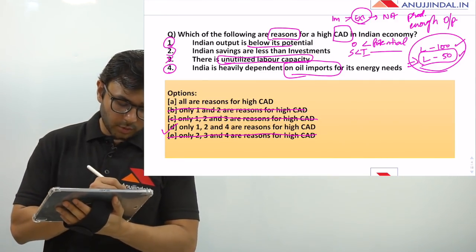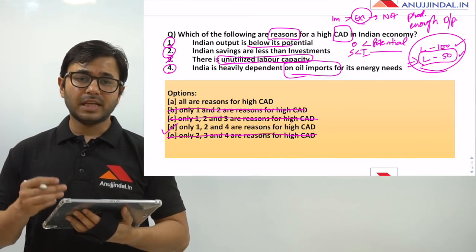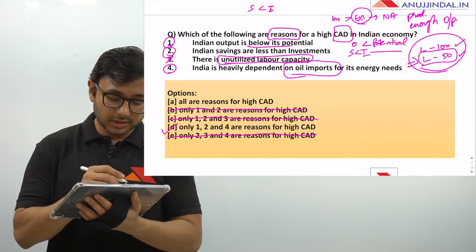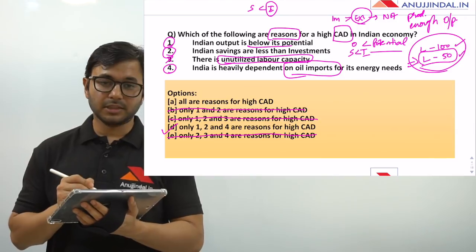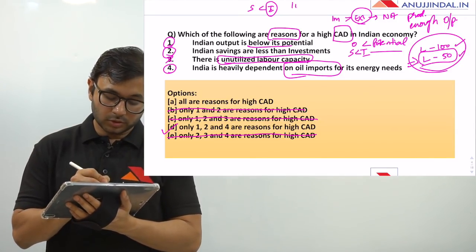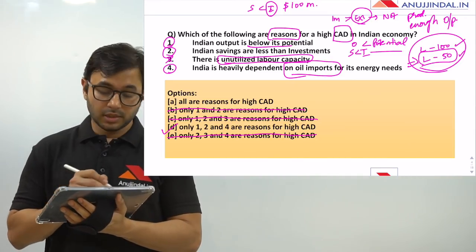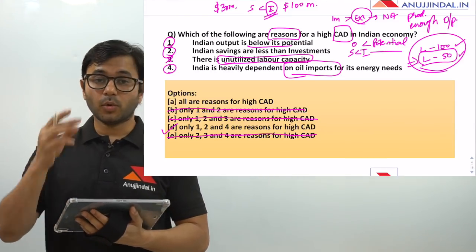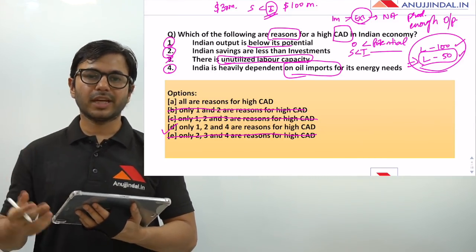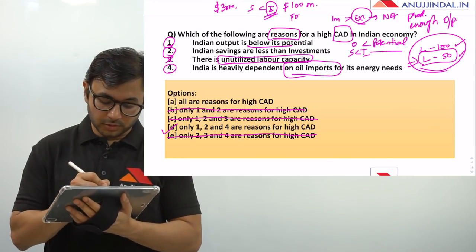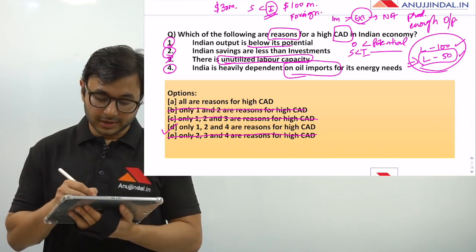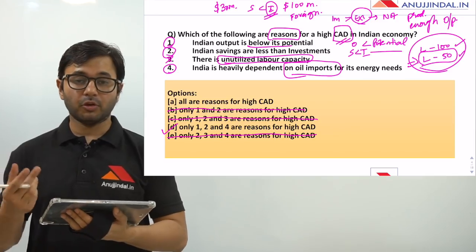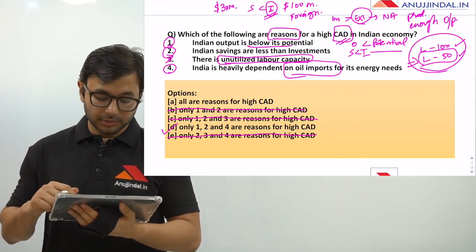Now let's understand option 2 — Indian savings are less than investments. Investments cannot just be reduced. If the economy wants to invest 100 million dollars but savings are only 30 million dollars, investors will borrow from the foreign market. When they borrow from the foreign market, CAD goes up automatically. So option 2 is also a reason for high CAD. The correct answer is D — options 1, 2 and 4 are reasons for high CAD.